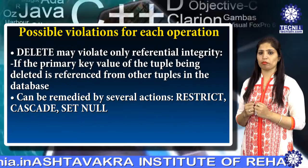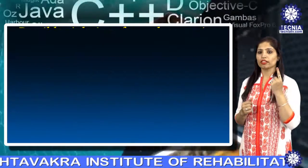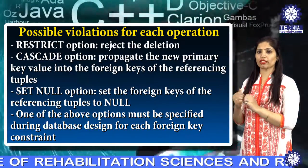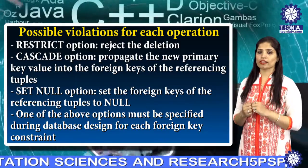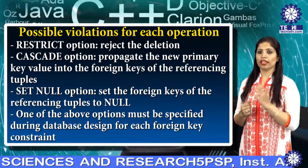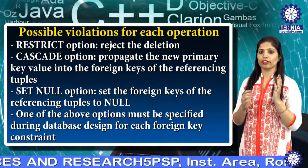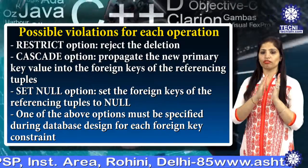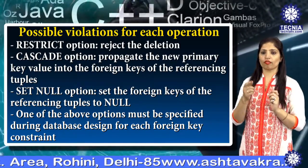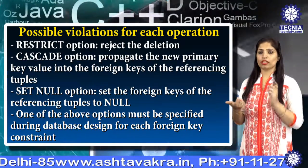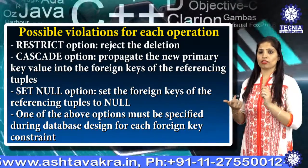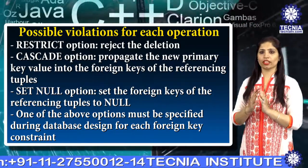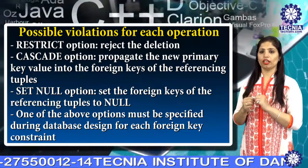Let's discuss each one. The restrict operation is used to reject the deletion. The cascade option propagates the new primary key value into the foreign key of the referencing tuple. The set null option sets the foreign key of the referencing tuple to null.